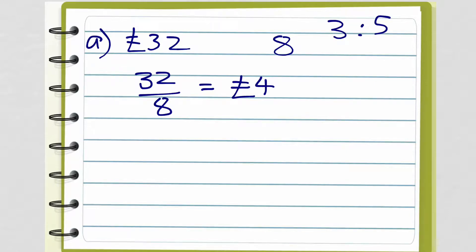OK, so A, £32 into 3 is to 5. So the first thing you should have done is added together 3 and 5 to make 8 parts altogether. Find out what one part is worth. 32 divided by 8, which is £4. So if the ratio is 3 to 5, we multiply each by 4. So 3 times 4 is £12. 5 times 4 is £20.